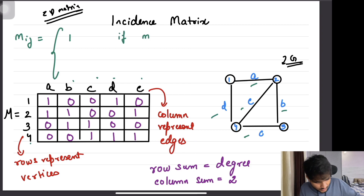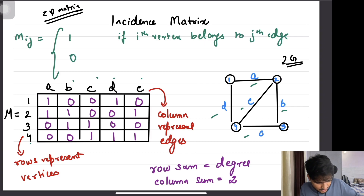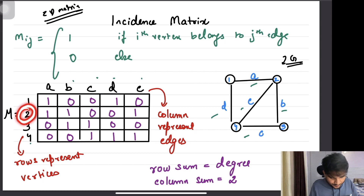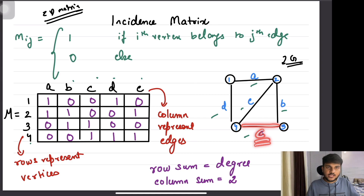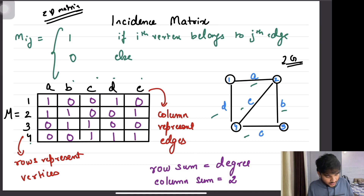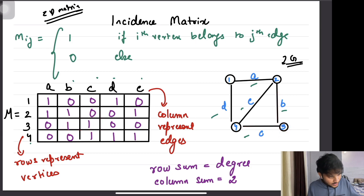M[i][j] equals 1 if the i-th vertex belongs to the j-th edge, else 0. For example, vertex 2 has an entry 1 for edge A because 2 is part of edge A. Vertex 3 has an entry 1 for edge C because 3 is part of edge C. Vertex 4 is part of edges D, E, and C — so those three cells are 1. Vertex 3 is part of C and B; vertex 2 is part of A and B; vertex 1 is part of D and A.